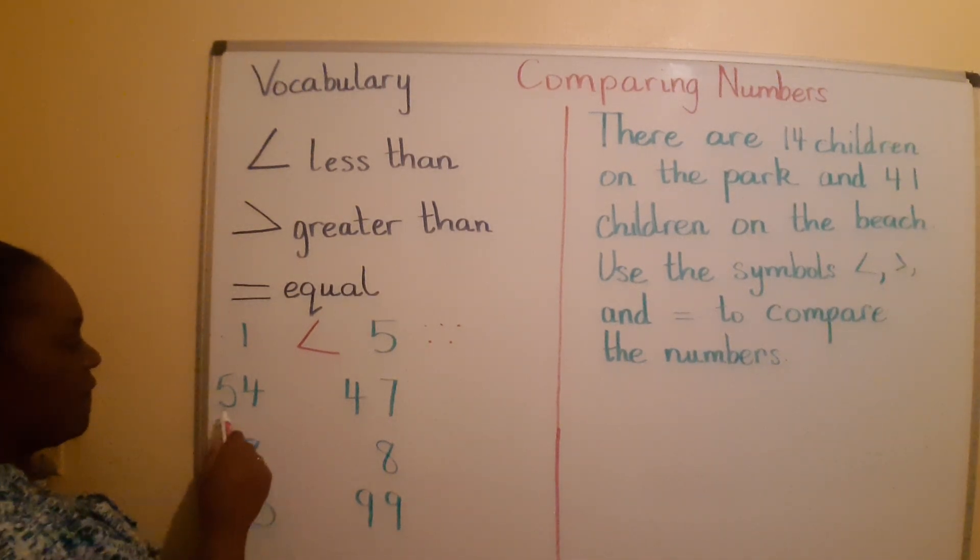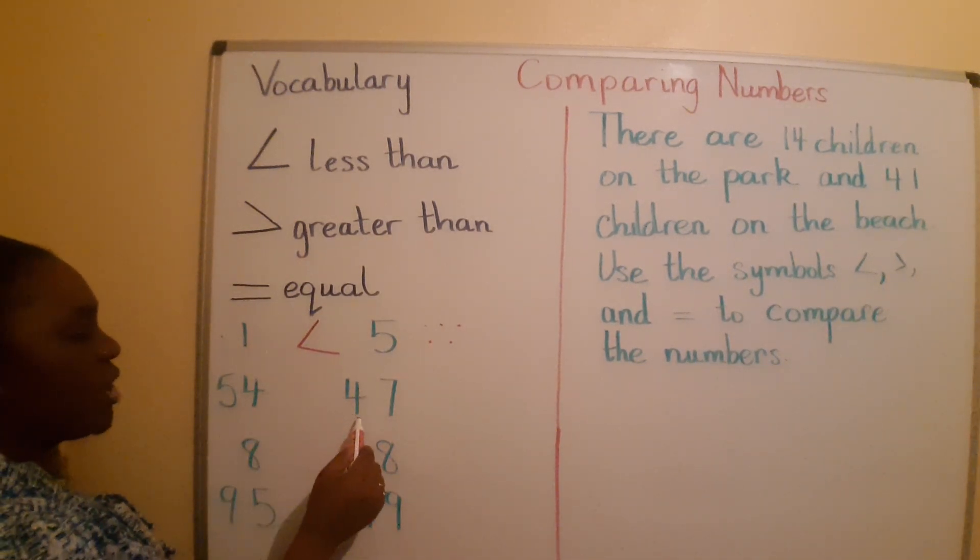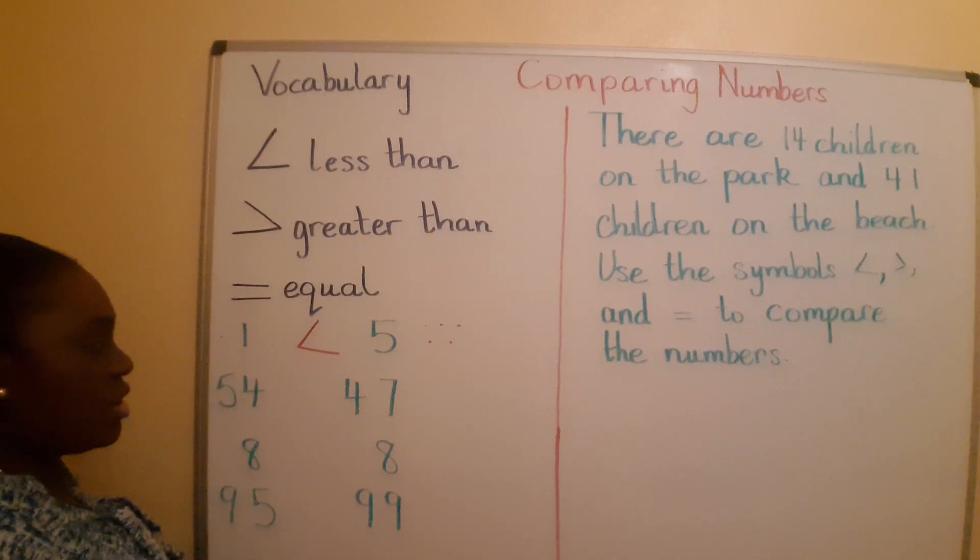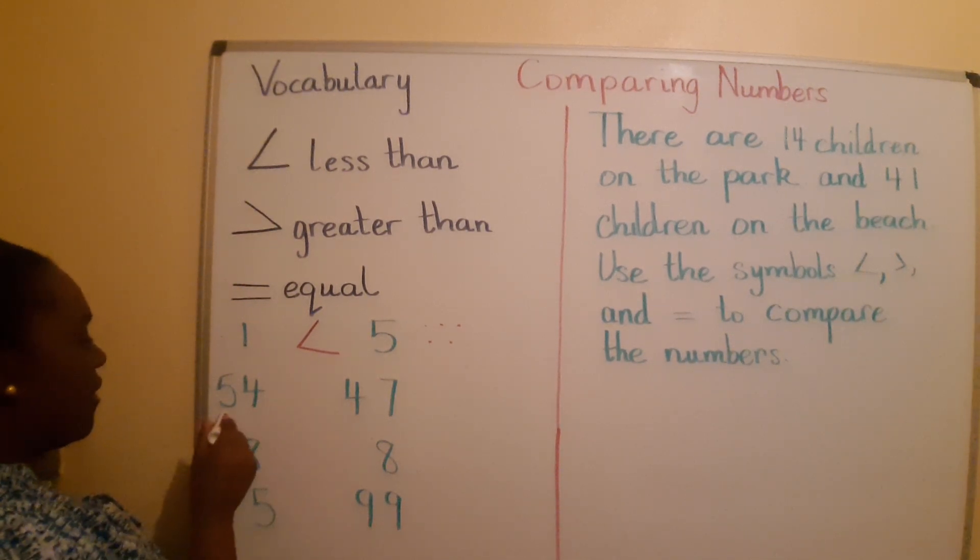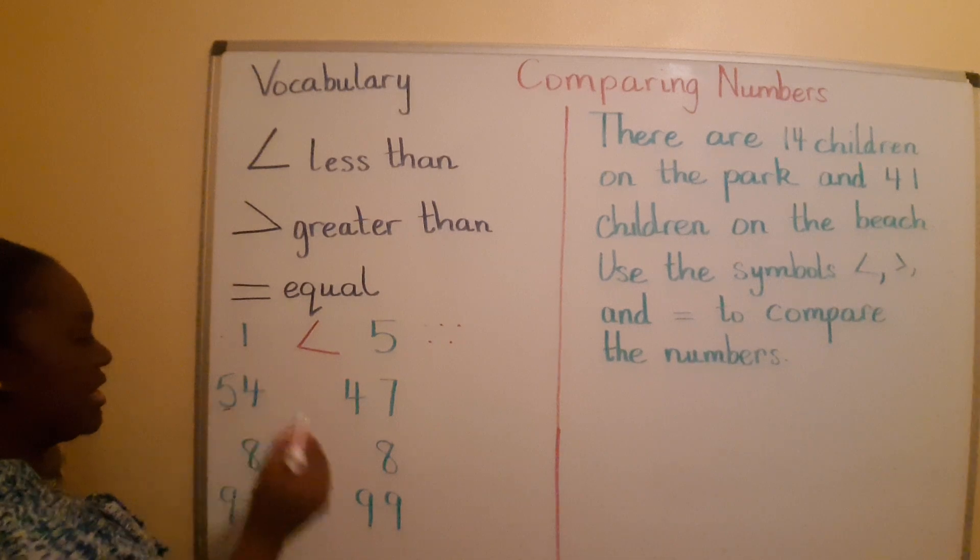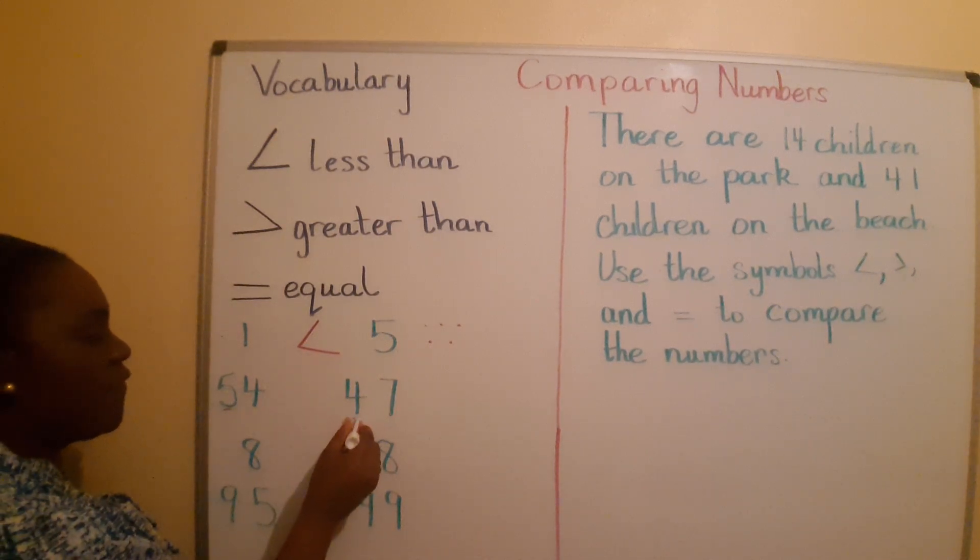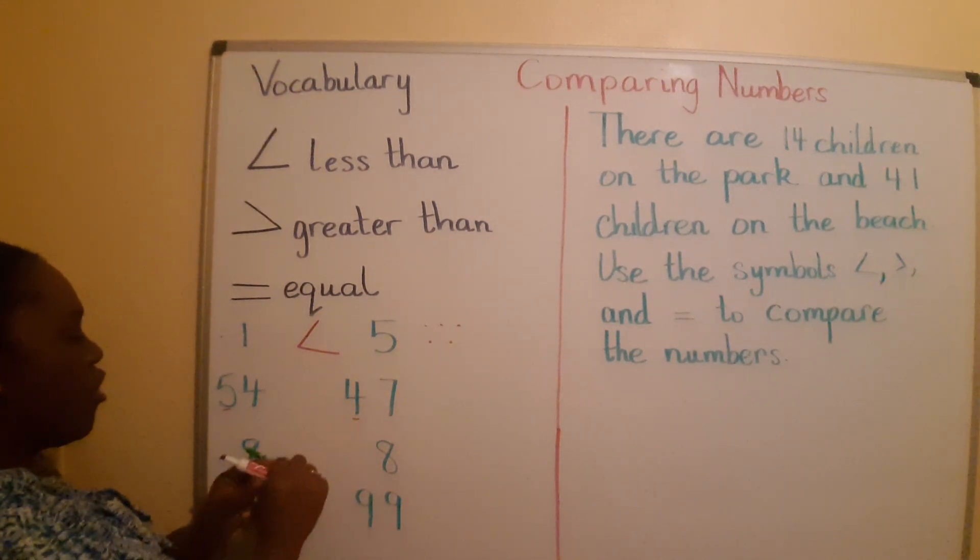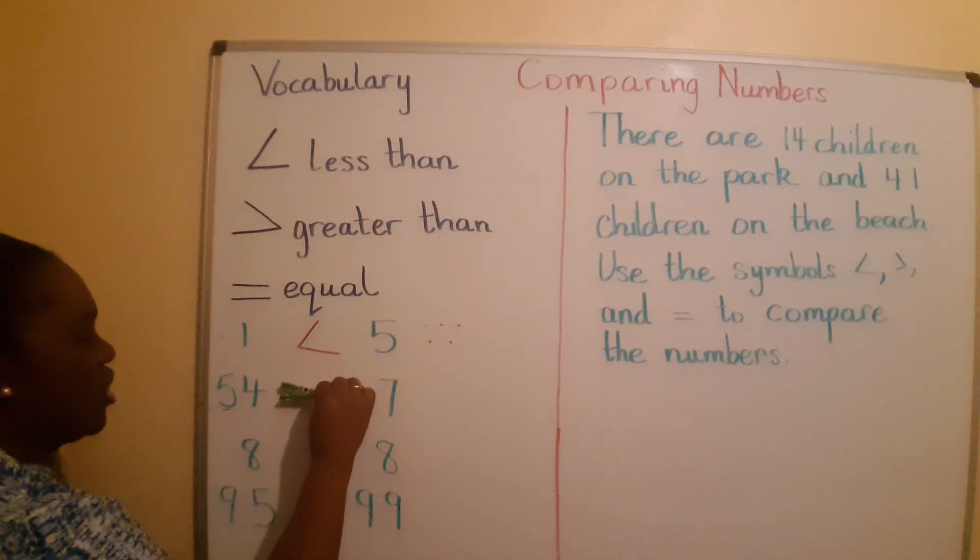We also have 54 and 47. Which number is greater? We have a 5 in the tens place and we have a 4 in the tens place. Therefore, 54 is greater than 47.